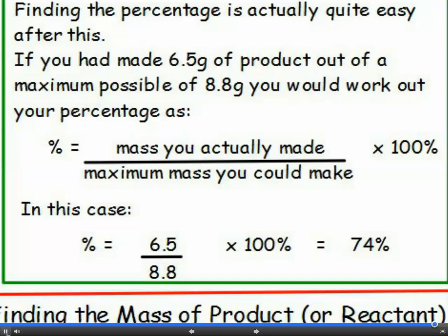In the example given here, the pupil should have made 8.8 grams, but only actually made 6.5. The percentage yield is 6.5 divided by 8.8 multiplied by 100. This is 74%. Again, don't worry too much about the number of decimal places you give your answer to.